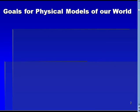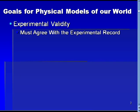First, we will start with an overview of what the goals should be for a theory of what the world is made of. A first goal is that any physical model must have experimental validity, in that it must agree with the experimental record. Clearly, if a model predicts one thing and nature unambiguously indicates something else, the model must be set aside or improved.